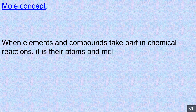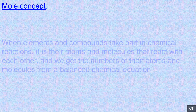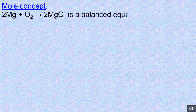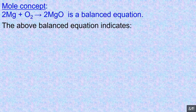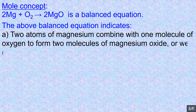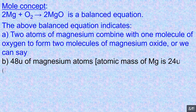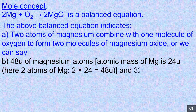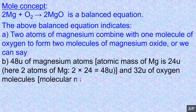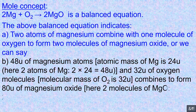Mole concept. When elements and compounds take part in chemical reactions, it is their atoms and molecules that react with each other, and we get the numbers of their atoms and molecules from a balanced chemical equation. 2Mg + O₂ → 2MgO is a balanced equation. This indicates: 2 atoms of magnesium combine with 1 molecule of oxygen to form 2 molecules of magnesium oxide. Alternatively, 48 U of magnesium atoms (atomic mass of Mg is 24 U; here 2 atoms of Mg: 2×24) plus 32 U of O₂ combines to form 80 U of magnesium oxide (2×(24+16) = 80 U).